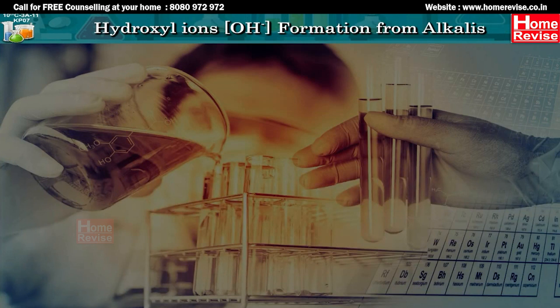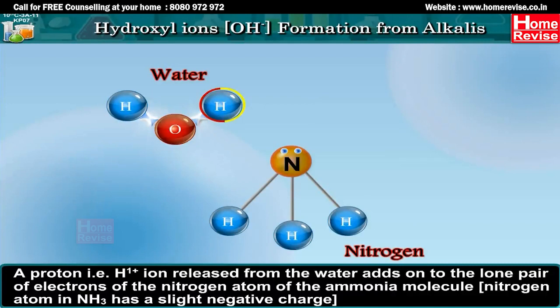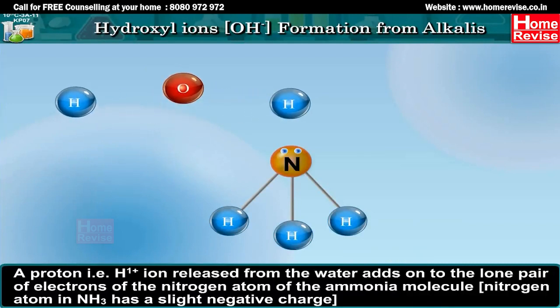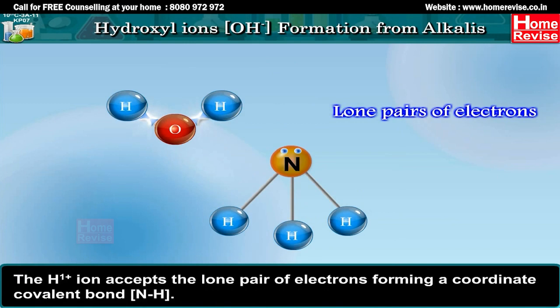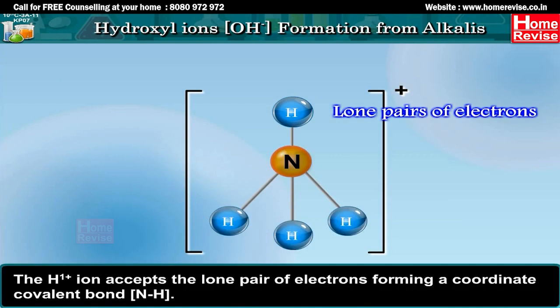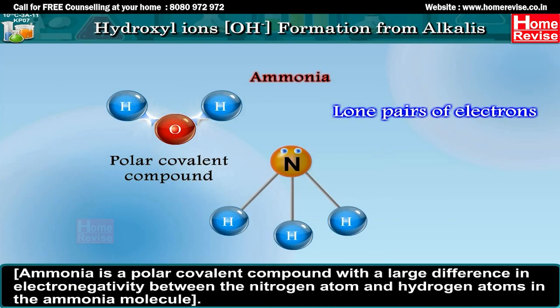Formation of hydroxyl ions OH- from alkalis: A proton (H+ ion) released from water adds on to the lone pair of electrons of the nitrogen atom of the ammonia molecule. The nitrogen atom in NH3 has a slight negative charge, and the H+ ion accepts the lone pair of electrons, forming a coordinate covalent bond. Ammonia is a polar covalent compound with a large electronegativity difference between nitrogen and hydrogen atoms.